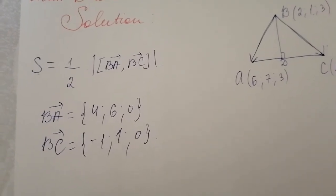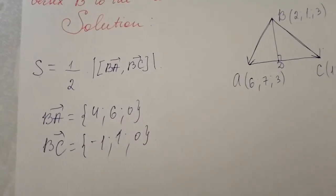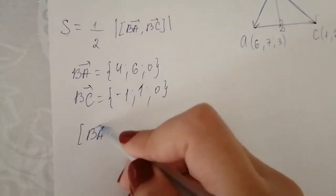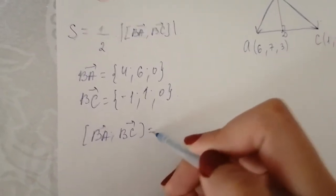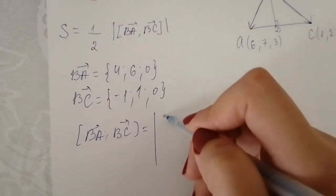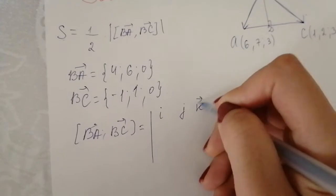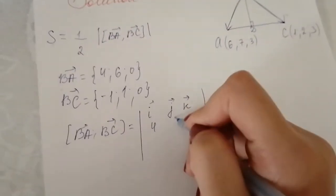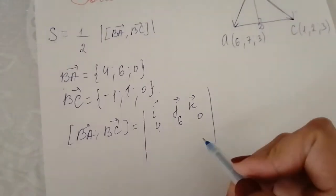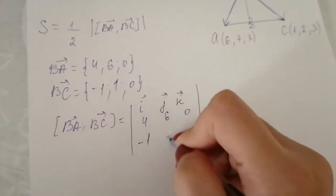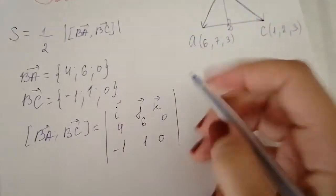Now it's time to calculate the vector product of vectors BA and BC. The product is equal to a determinant. In the first row I write unit vectors i, j, k. In the second row I write the coordinates of vector BA: 4, 6, 0. In the third row I write the coordinates of vector BC: negative 1, 1, and 0.